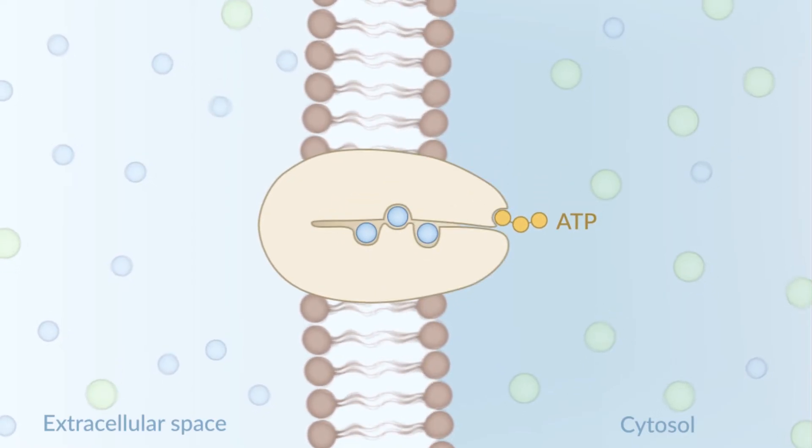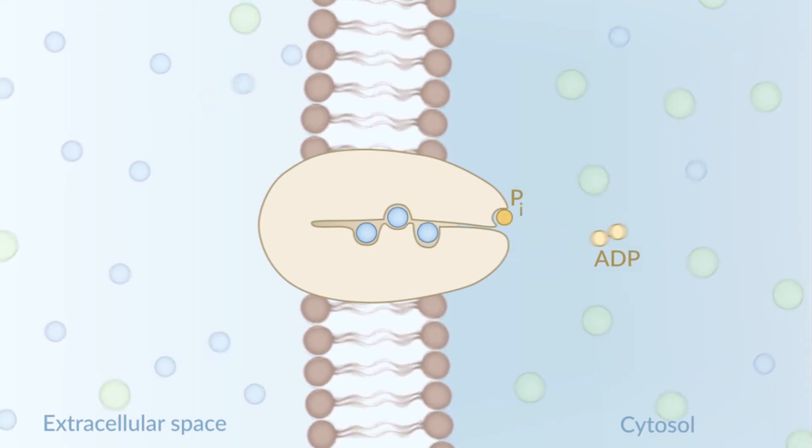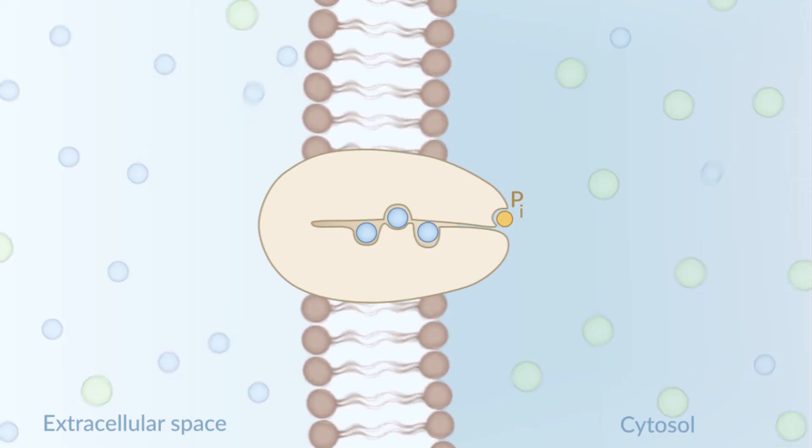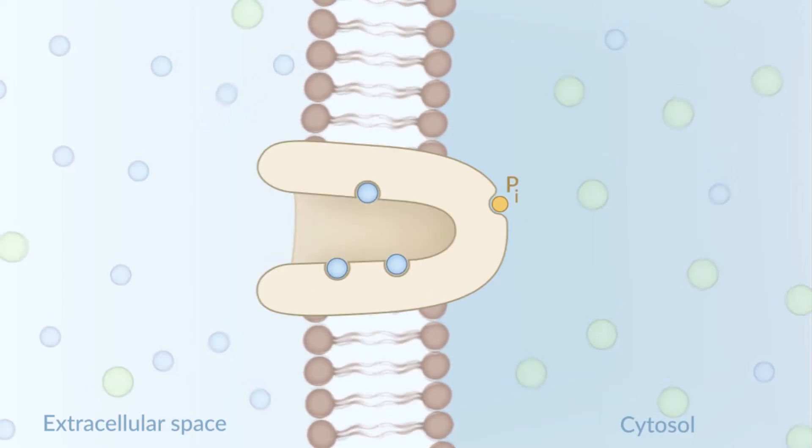Now, autophosphorylation occurs, which releases ADP while phosphate still remains bound to the protein. Next, the protein opens towards the extracellular side, releasing three sodium ions into the extracellular space.